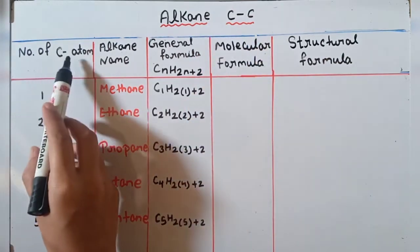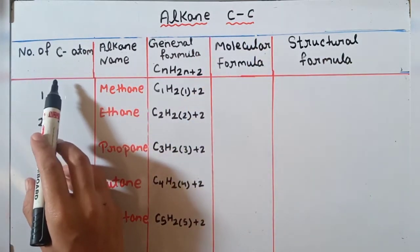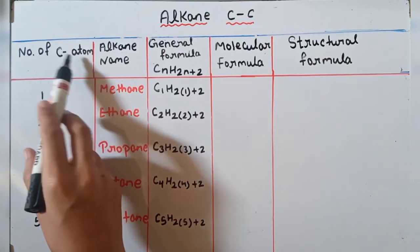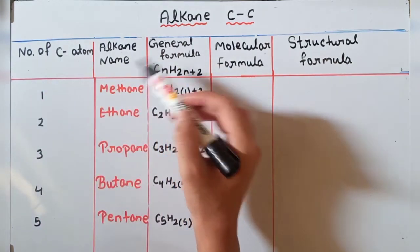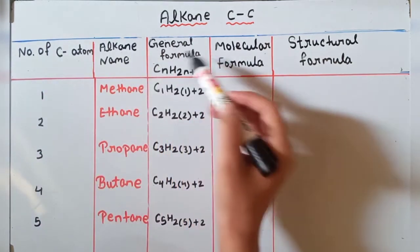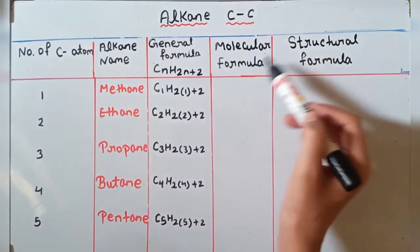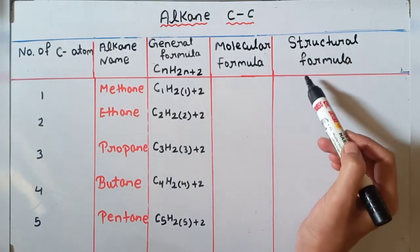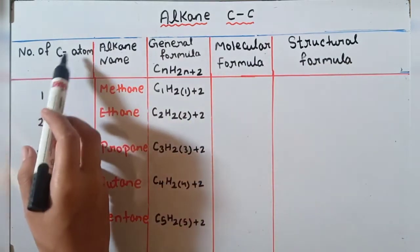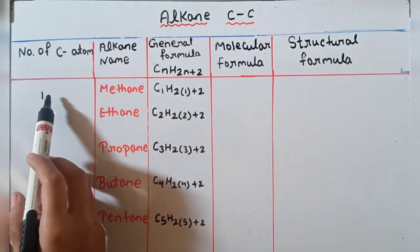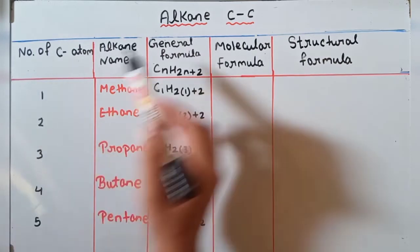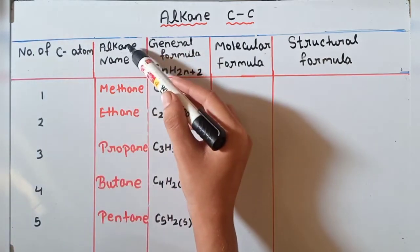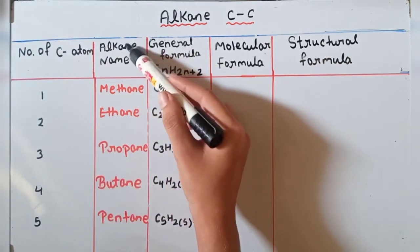Here we have a table with columns: number of carbon atom, alkane name, general formula, molecular formula, and structural formula. If the number of carbon atom is one, agar number of carbon atom ek hai, so alkane ka naam kya rahega?